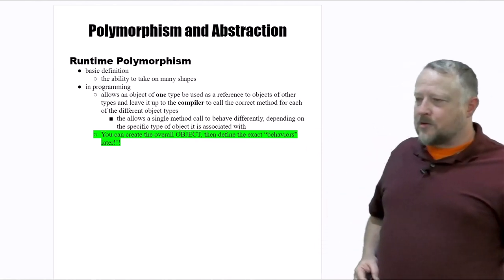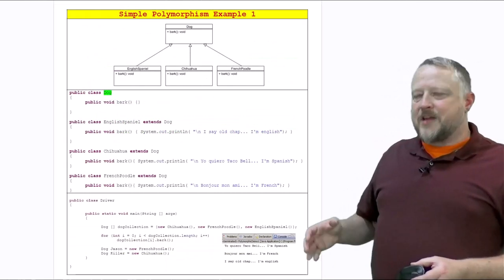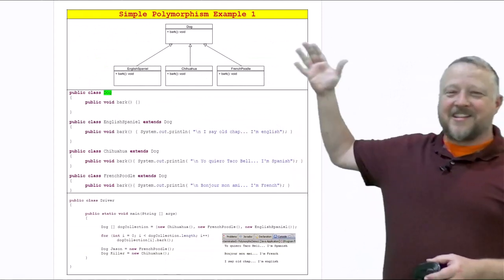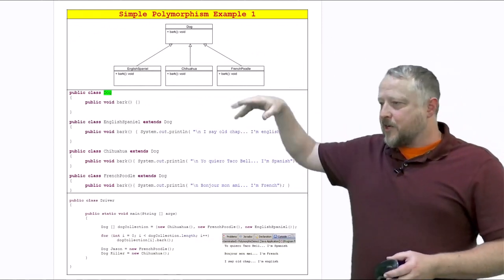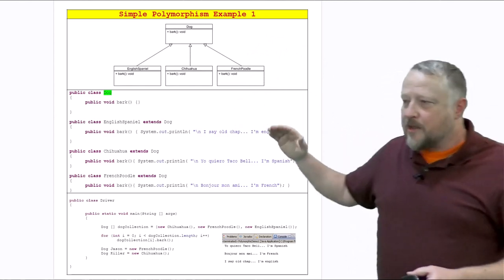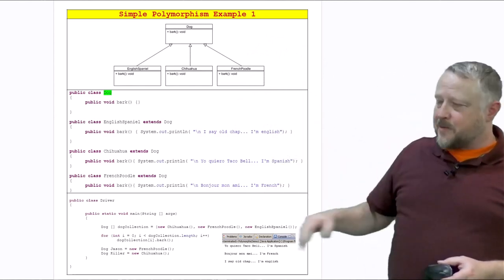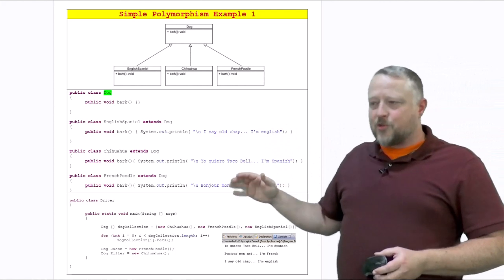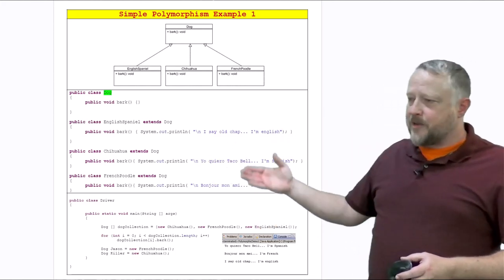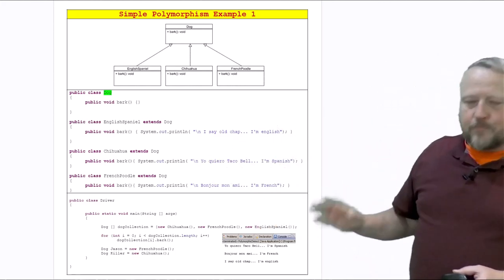Now what does that look like? In example number one you can tell right off the bat there's inheritance. All of these are dogs - English Spaniel, Chihuahua, French Poodle. The only thing that's really different to keep things simple is their bark, to tell you exactly that they're different barks.